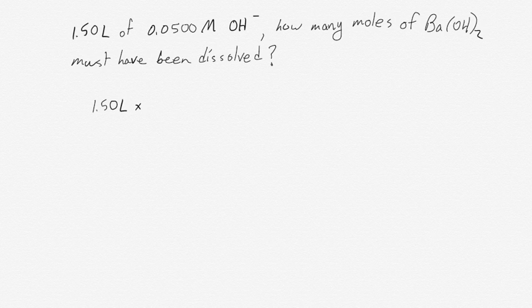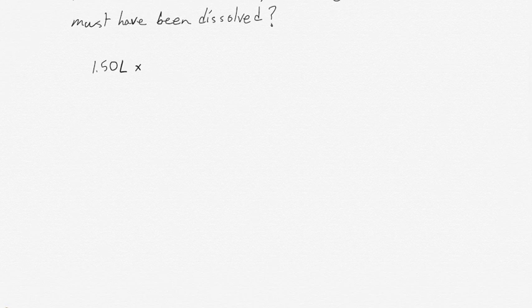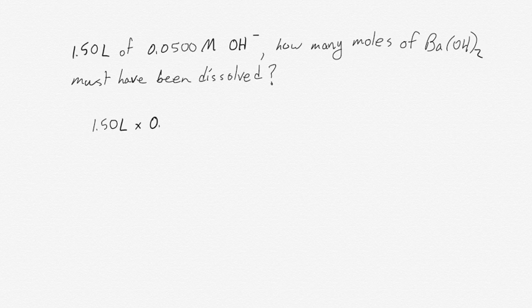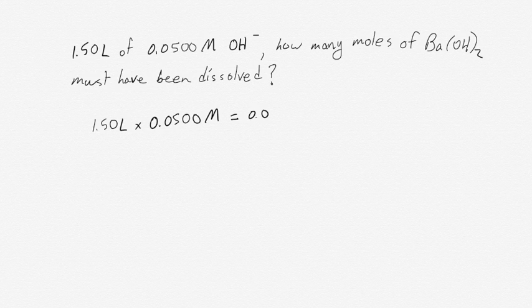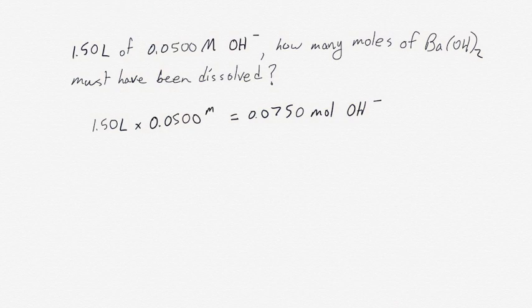We have 1.50 liters and we can use the ratio, molarity being a ratio of moles per liters. So we have 1.50 liters times 0.0500 molar, and we can end up with a number of moles. 0.0750 moles of OH-. And the reason this works again is because molarity is a ratio. It really has units of moles per liter. So we have moles per liter and our liters will cancel and leave us with moles.